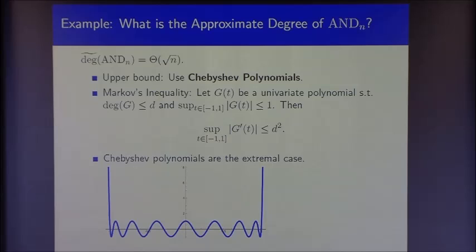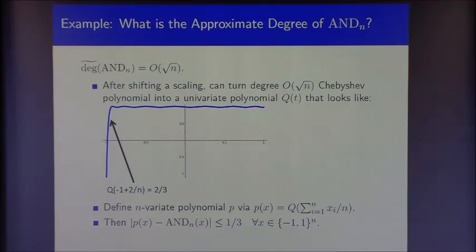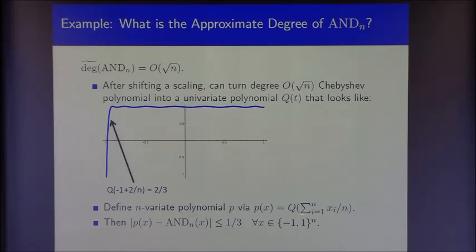By shifting and scaling this Chebyshev polynomial, we can achieve a polynomial that has a big jump right around -1: at input -1 it takes value about -1, then jumps quickly up to +1 and hovers around there for the rest of the unit interval. This is what we want to approximate the AND function, because AND evaluates to -1 on a single input (the input of maximal Hamming weight) and evaluates to +1 everywhere else. We apply this univariate polynomial q to the Hamming weight of an n-dimensional input, and we only need degree √n because we need the derivative to be roughly proportional to n.